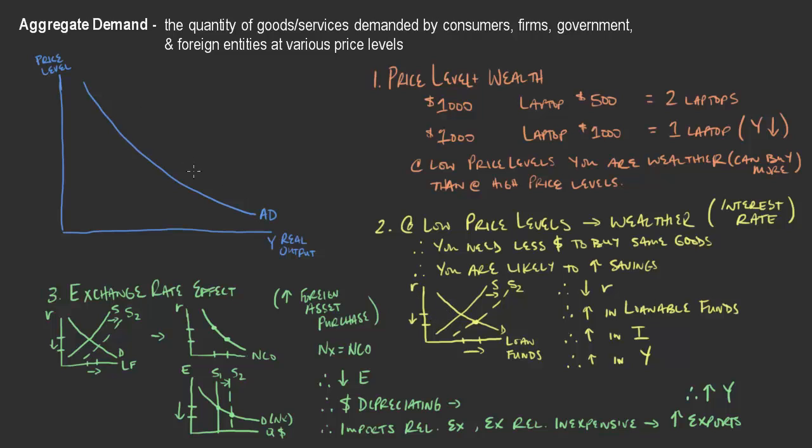These are three different ways — drawing on things we've previously discussed — to understand why aggregate demand would be downward sloping. If you understand those three things, it makes all the shifts and everything that is to come much easier to explain and understand.